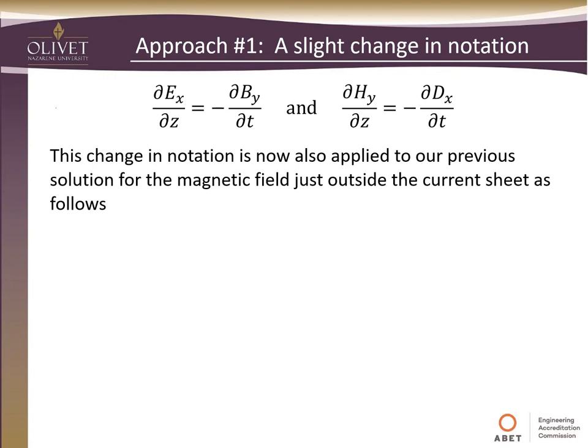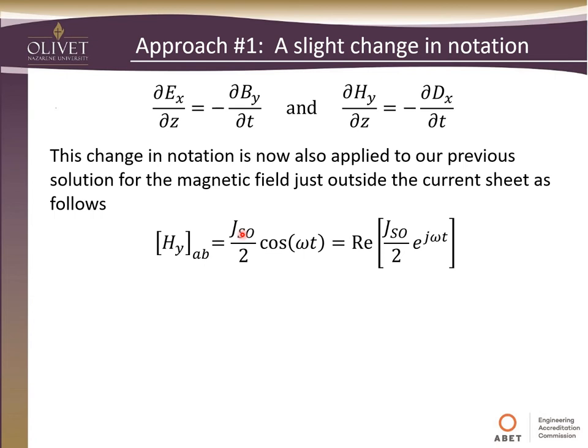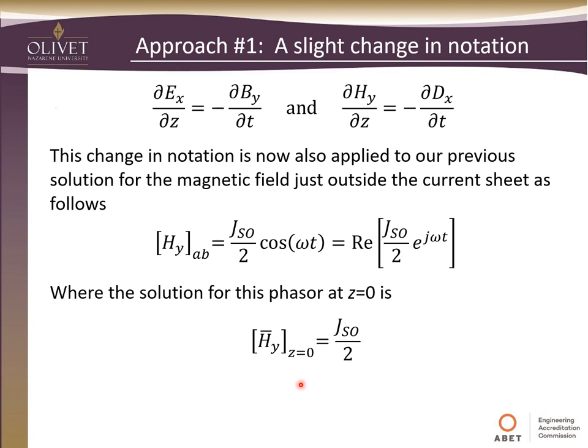This change in notation is also applied to the solution we got for the magnetic field just outside the current sheet. We have J_s0/2 times cosine(omega*t), which we can write as the real part of (J_s0/2)*e^(j*omega*t) — remembering that this is cosine(omega*t) plus j*sine(omega*t) and we just want the real part. This notation applies just on the positive Z side of that current sheet. The phasor solution at the current sheet when z = 0 is just the magnitude of our sinusoid.